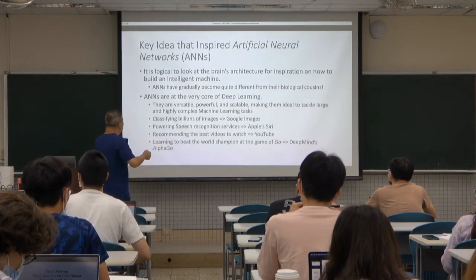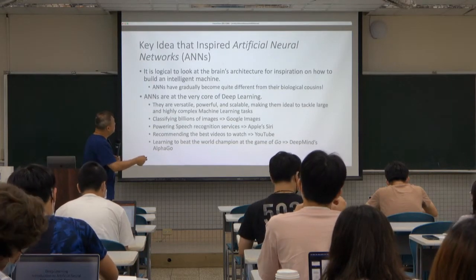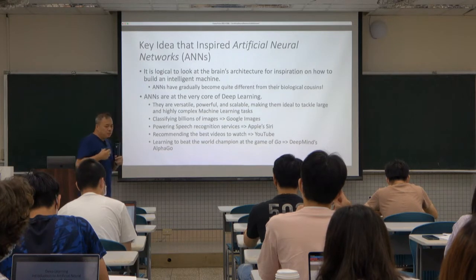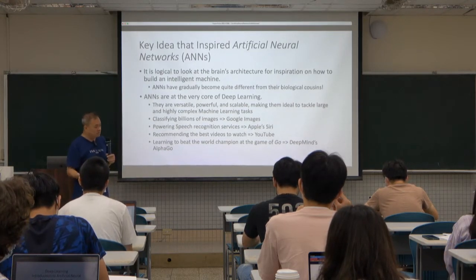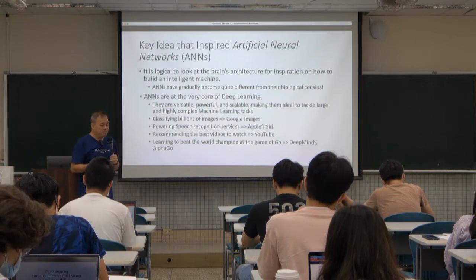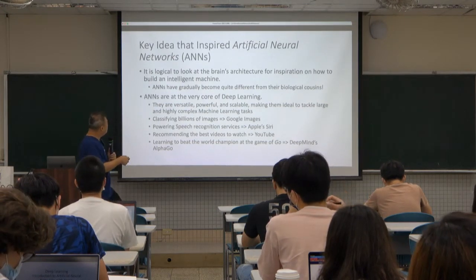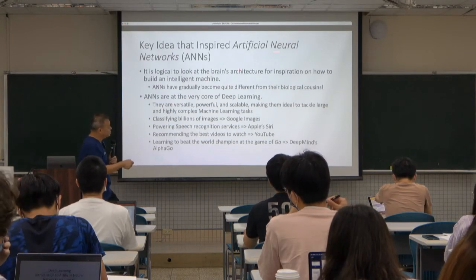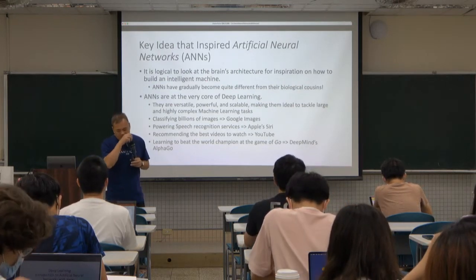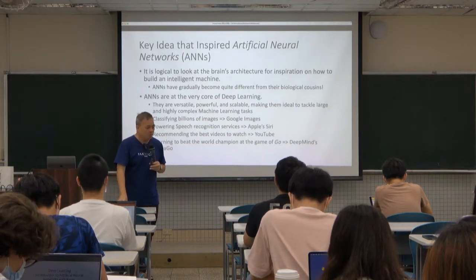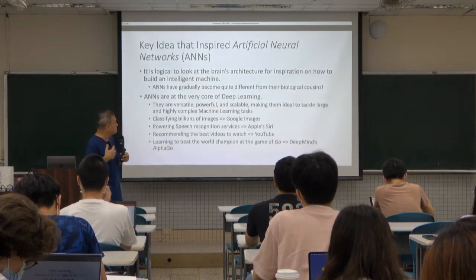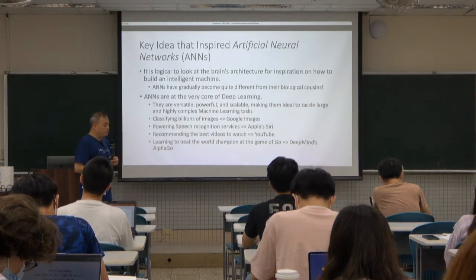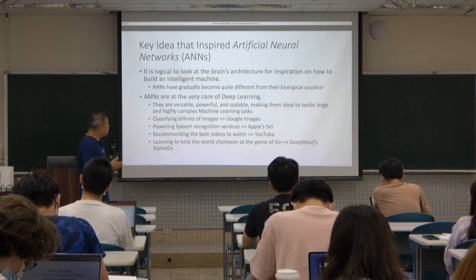Because we want to create artificial intelligence, it will be very logical to look at the brain architecture — because animals, including humans, are intelligent beings. So we can refer to that when we want to create an intelligent system. The brain is controlling the thinking, the ideas. So we look at the brain architecture if we want to build an intelligent machine.